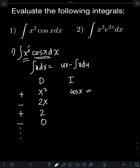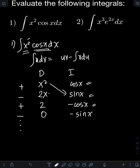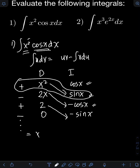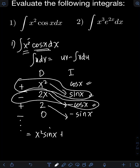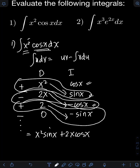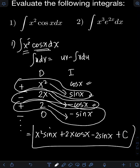We also need to integrate cosine x. The integral of cosine x is sine x. Then the integral of sine x is negative cosine x. And the integral of negative cosine x is negative sine x. Now we multiply the diagonal terms including the sign convention: positive x squared times sine x, plus negative 2x times negative cosine x — which gives positive 2x cosine x — plus positive 2 times negative sine x, which is negative 2 sine x. Don't forget the plus C. That is the final answer for number 1.